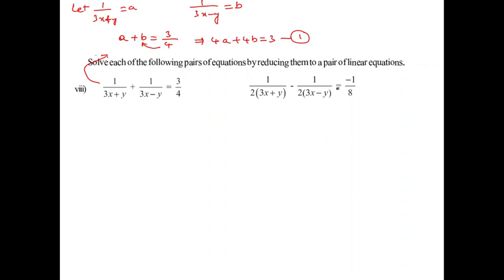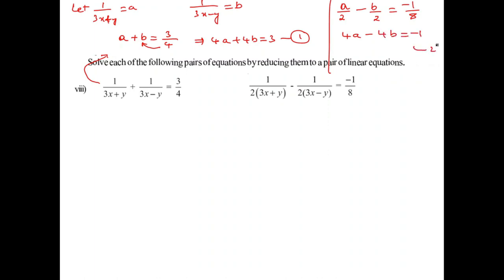The second equation resolves to give, after cross-multiplication, 4A minus 4B equals minus 1 (equation 2). Adding equations 1 and 2: 8A equals 2, so A equals 2 by 8 equals 1 by 4.